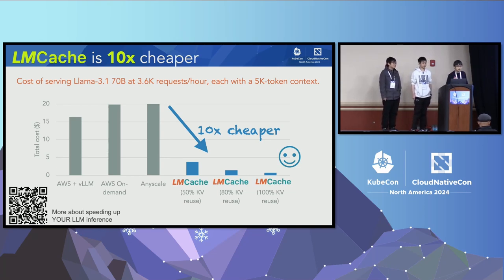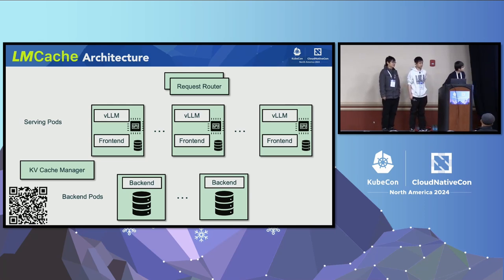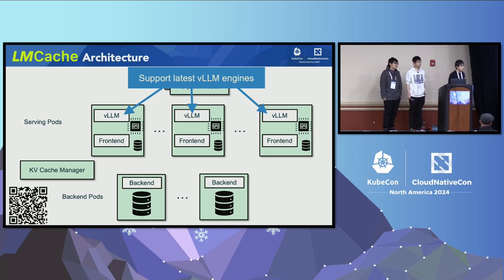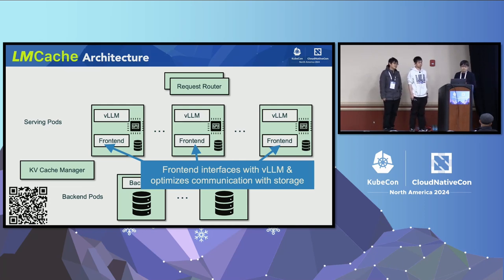Before I hand over to my student and collaborators for demos, let me quickly go over the architecture. There is a request router at the top that handles all requests and maps them to serving pods. Each serving pod runs a state-of-the-art vLLM serving system. We collaborate with vLLM so that serving pods can run the latest vLLM version. Behind each vLLM, there's a front-end server of LMCache that handles interaction with vLLM and maps the KV cache back to the back-end.